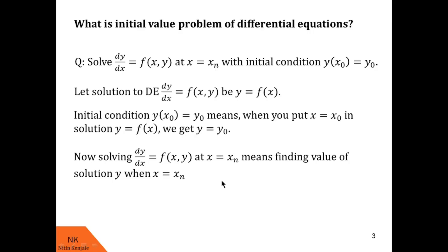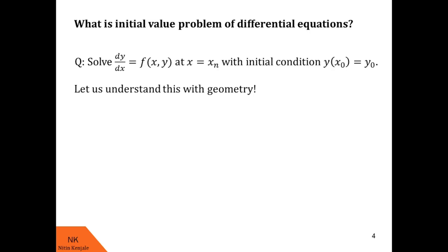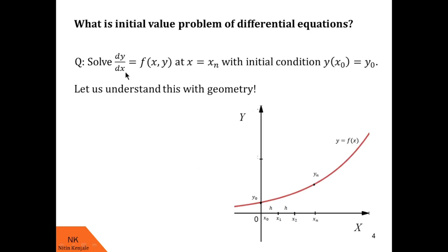Let us understand this concept with the help of geometry. We assume the solution to the differential equation dy/dx = f(x, y) is y = f(x). Then the initial condition y(x0) = y0 means some initial point on this solution — at x = x0 we get y = y0 on the solution curve. Solving the differential equation at x = xn means finding the point on the solution curve y = f(x) at x = xn, and we call that point y.